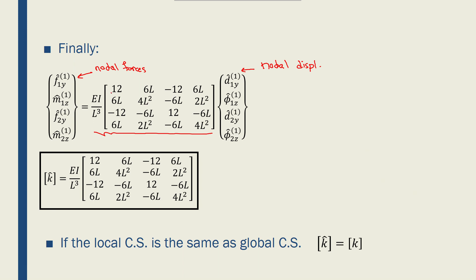And if you multiply this row with the vector, it gives you f1y. If you multiply the second row of this matrix with this vector, it gives you m1z, so on and so forth. And this is the stiffness matrix of a beam element in local coordinate system.